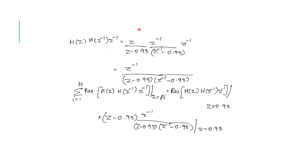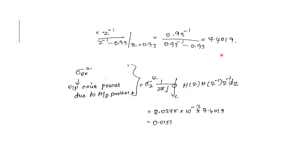There is only one pole at Z equals 0.93. Substituting that and evaluating, we get the value of sigma E0 squared. This is the output noise power due to the A to D conversion process. Substituting into the formula gives the final numerical answer.